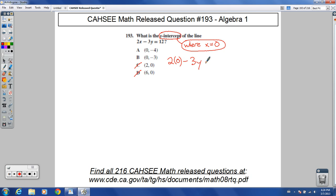There we go. Minus 3y equals 12. And so 2 times 0, that would be 0. That would go away. I can just say negative 3y equals 12.